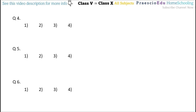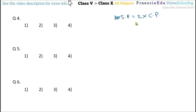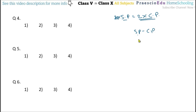Question number 4: the selling price of an article is double its cost price. So SP equals 2 multiplied by CP. Profit equals SP minus CP, which equals 2CP minus CP, giving CP. So the profit equals the cost price itself, which is given in option number 2.